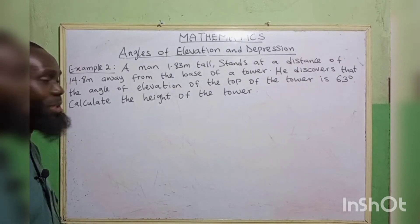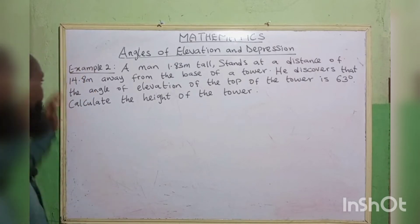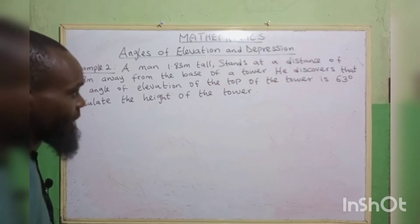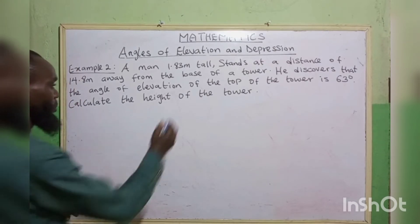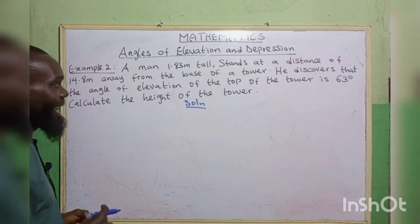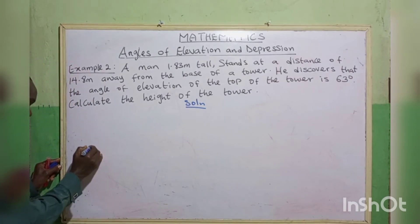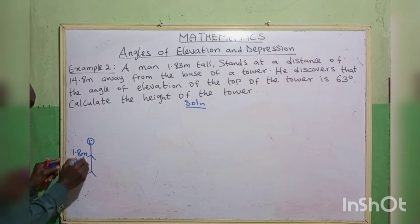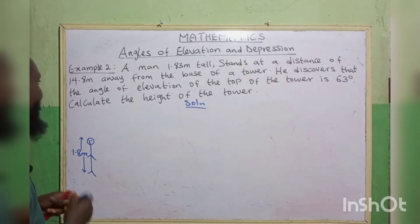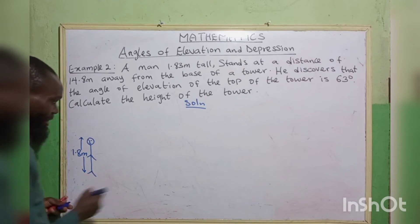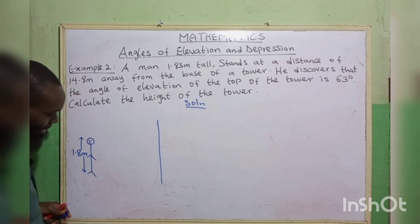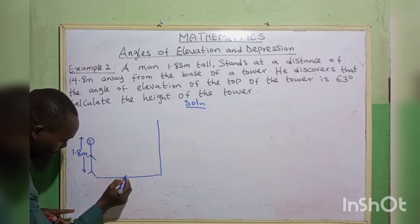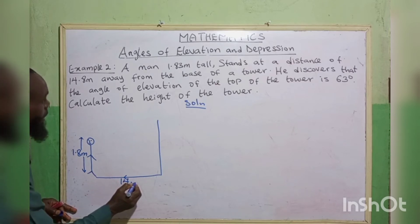Example 2. A man 1.83 meters tall stands at a distance of 14.8 meters away from the base of a tower. He discovers that the angle of elevation of the top of the tower is 63 degrees. Calculate the height of the tower. Let's assume this is the man, with height 1.83 meters. He is standing 14.8 meters away from the base of the tower.